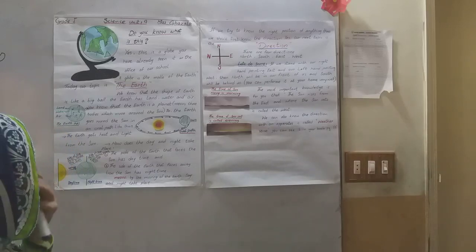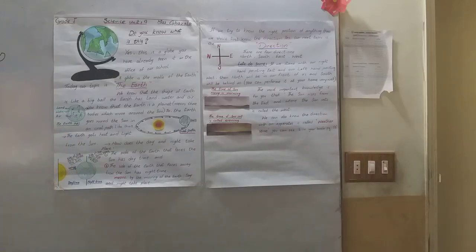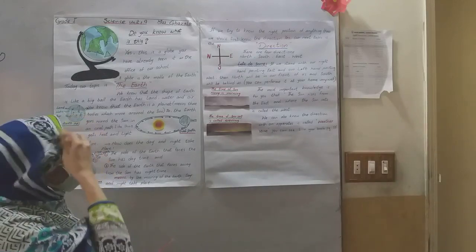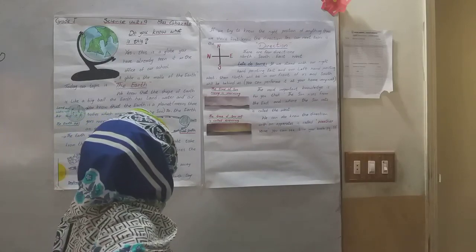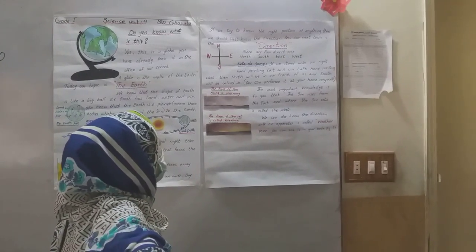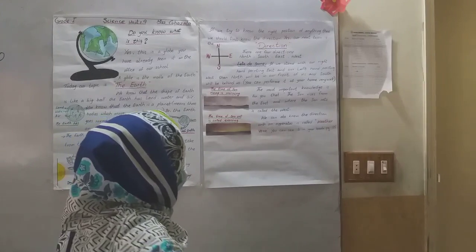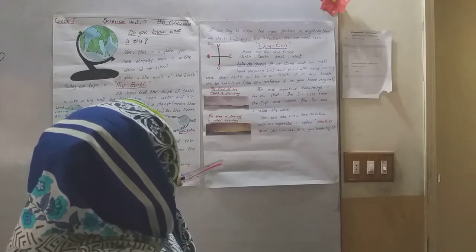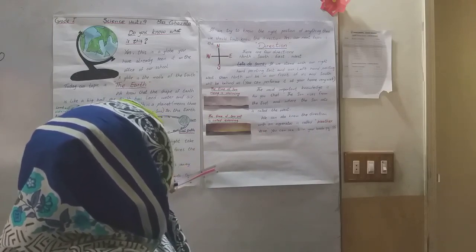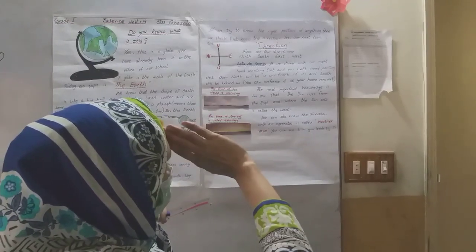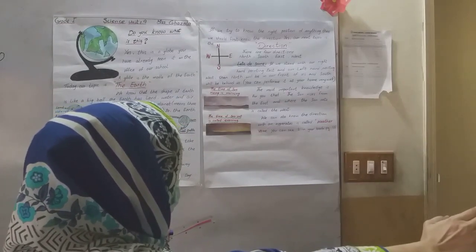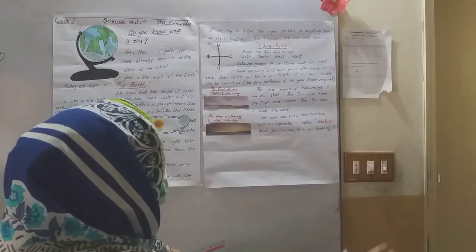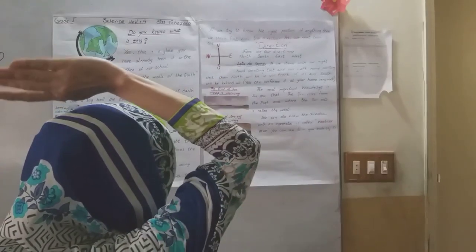Let's do something. If we stand with our right hand pointing the east and our left hand pointing the west, then north will be in front of us and south will be behind us.